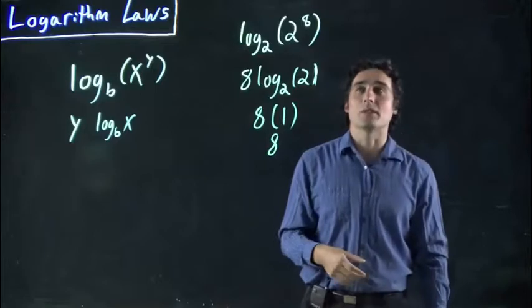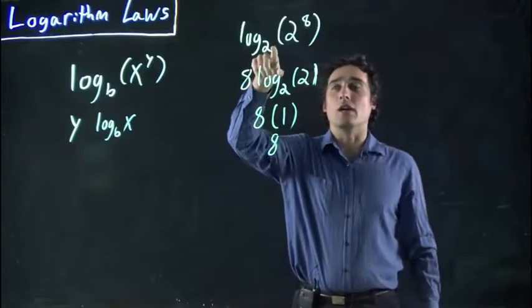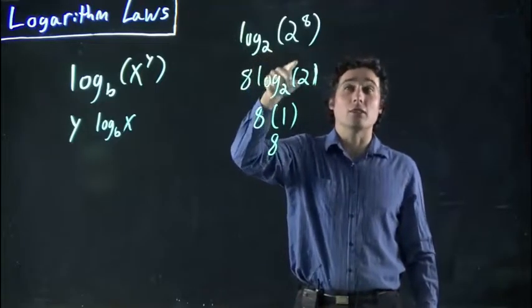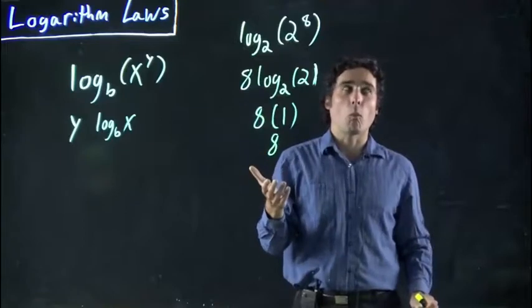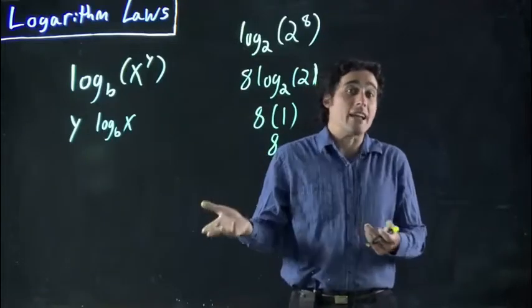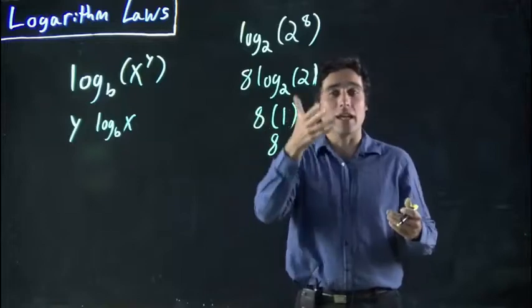Of course, that was kind of a silly example, because also if you look at this and go, well, what does 2 have to be raised to to become 2 to the 8? Well, by definition, it should be 8. 2 has to be raised to 8 to become 2 to the 8.